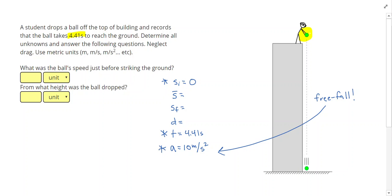Now that I have three givens, I can go ahead and start using equations to try to find my other unknowns. So next, I would say that I can find the final speed.